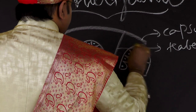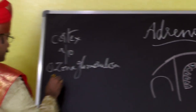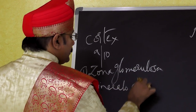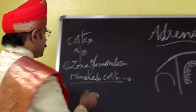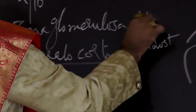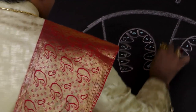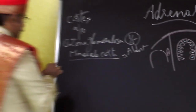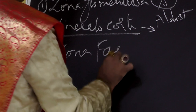The cells of the zona glomerulosa produce mineralocorticoids, specifically aldosterone, which helps in reabsorption of sodium from the distal convoluted tubules of the kidney. The zona glomerulosa forms one-fifth of the cortex, and sinusoids and blood vessels are present between the cells.